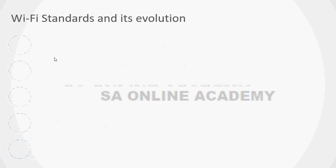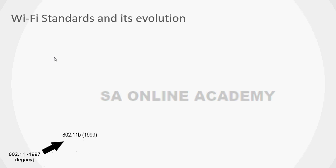Now we will look into Wi-Fi standards and their evolution. We will see in detail about each standard — benefits, modulation techniques, and more. The very first standard was released in 1997: 802.11, which is no longer in use. In 1999, 802.11b was released operating in the 2.4 GHz frequency, and at the same time 802.11a was released operating in the 5 GHz frequency.